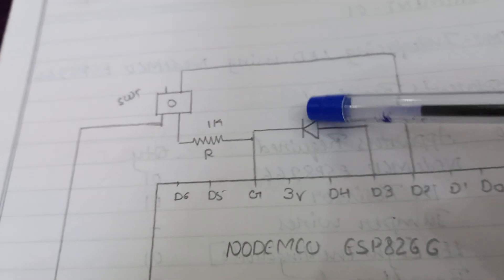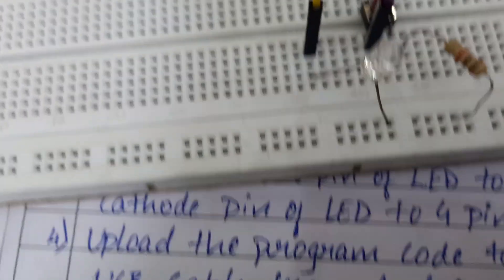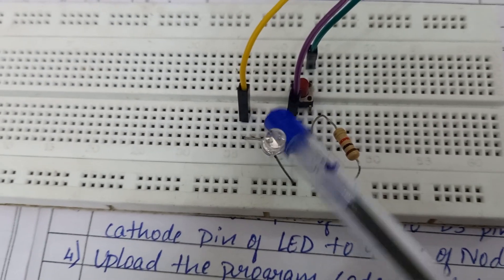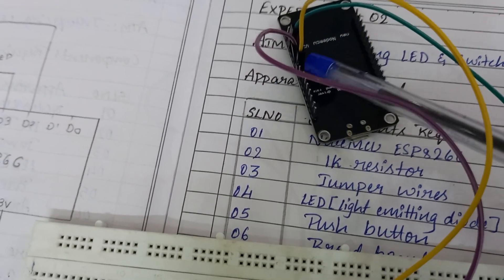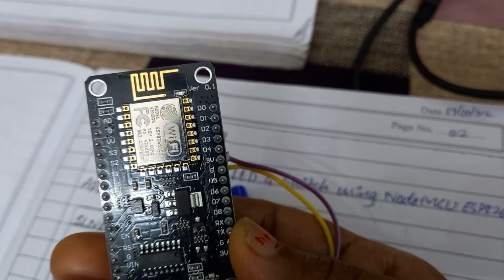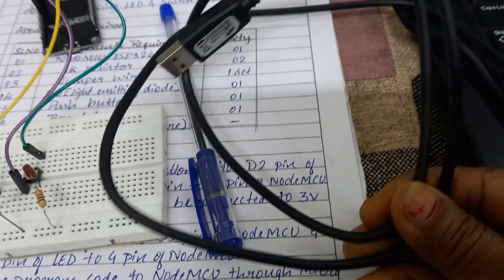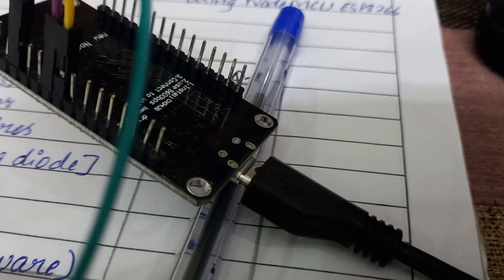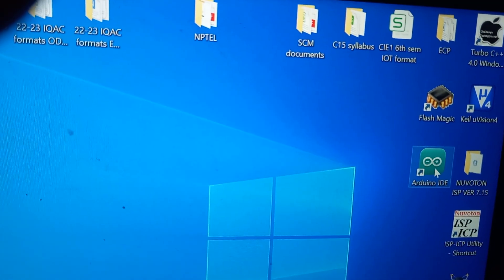Next, connect one LED between D3 and ground. The cathode is connected to the ground pin and the anode is connected to D3. After the 3V pin there is a ground pin — D0, D1, D2, D3, D4, then 3V, then ground. Now connect the USB cable between your NodeMCU and laptop.